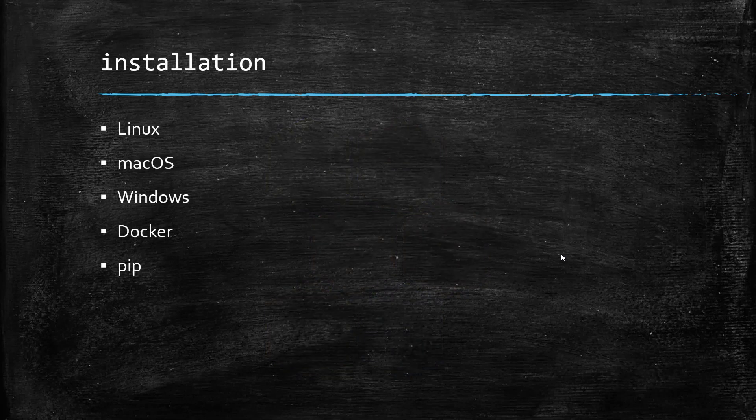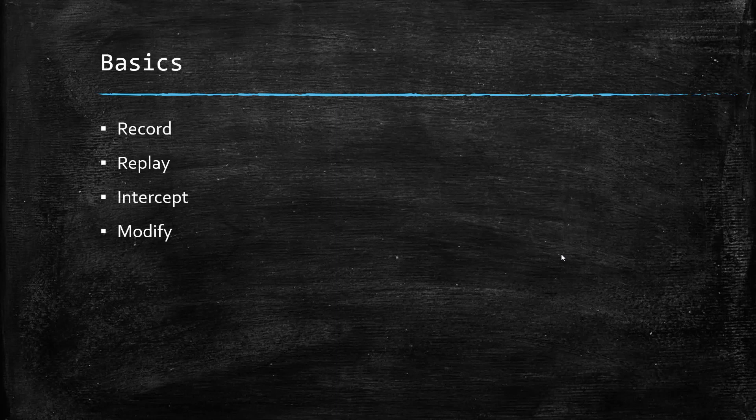You can install MITM proxy from the website. It supports Linux, Mac OS, and Windows. In Windows, there are two types of installations: you can use the .exe installable, or you can install it in WSL, the Windows Subsystem for Linux. In this video, I'm going to leverage the Windows Subsystem for Linux because that is the recommended installation for Windows. But if you want to install in Docker or use MITM proxy for advanced use cases, you can use the pip command to install MITM proxy.